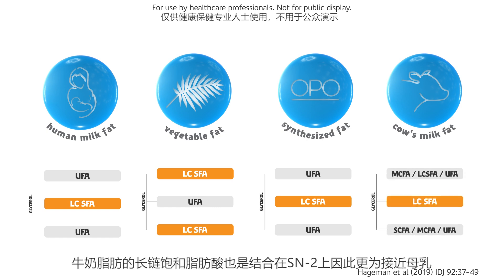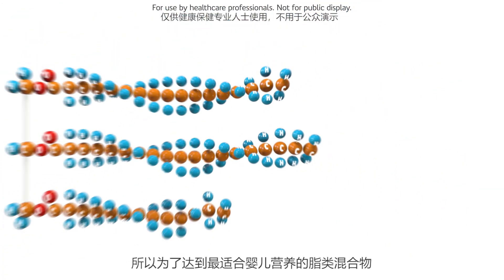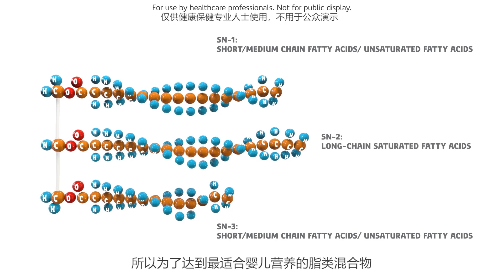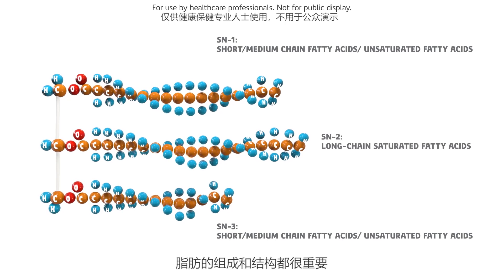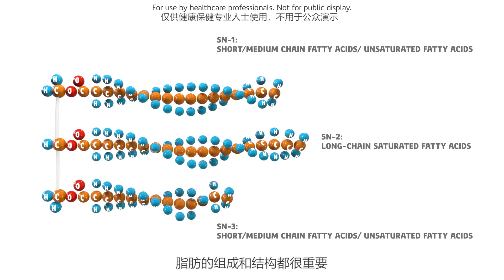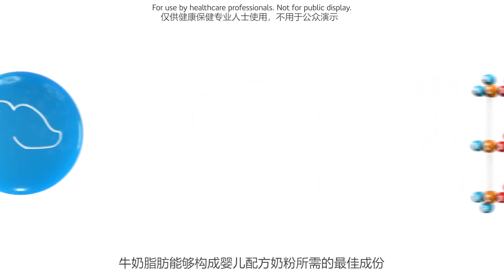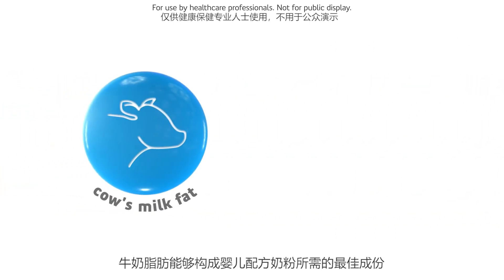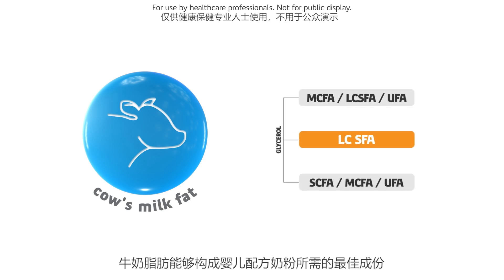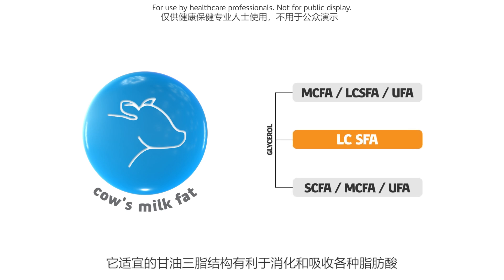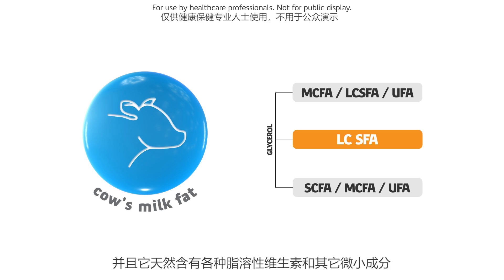Cow milk fat does have a favorable structure with most long-chain saturated fatty acids on the SN2 position. So, for the best lipid mixture for infant nutrition, the fat composition and the structure are of importance. Cow's milk fat enables composing an optimal fat component for infant formula. It has a favorable triglyceride structure for digestion and absorption, a wide variety of fatty acids, and it naturally contains fat-soluble vitamins and other minor components.